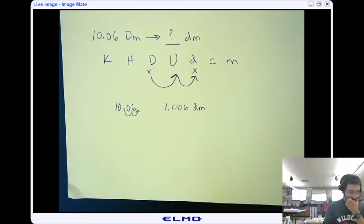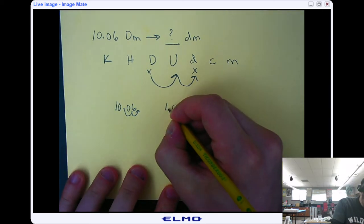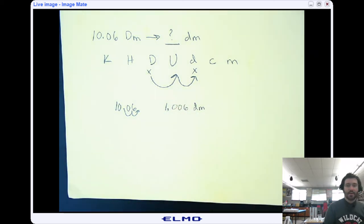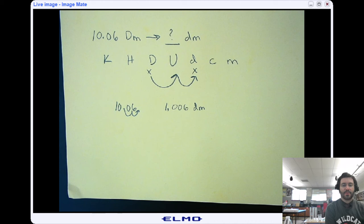Okay? Instead of, and just be really clear, that's a comma, not a decimal point, instead of 10.06 decameters.